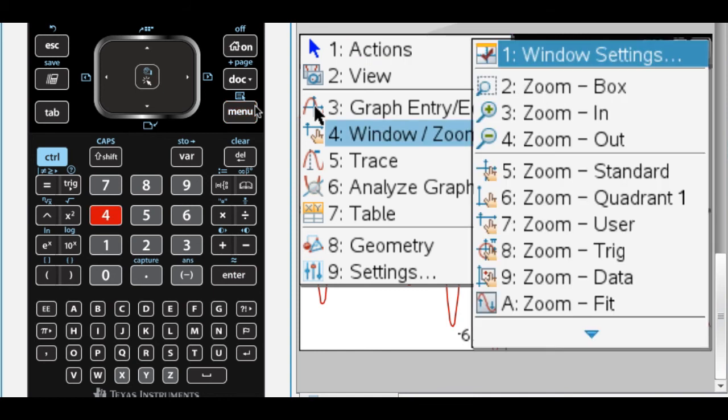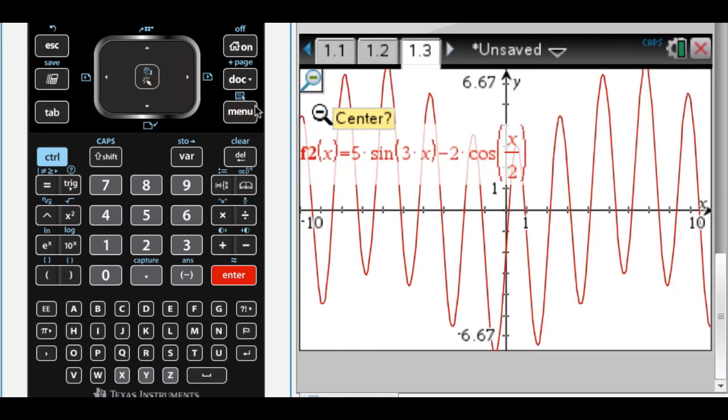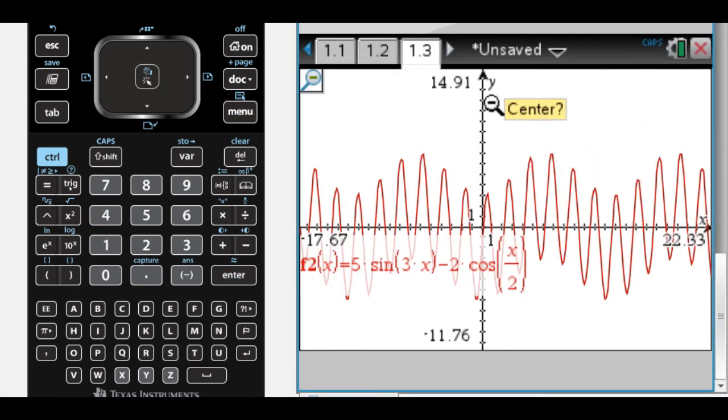So I go through the process again. I'm going to zoom out until I think I'm seeing the entire graph repeat itself, which that didn't take very long. And then I could zoom box if I needed to, but it's not really that crazy.